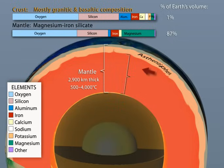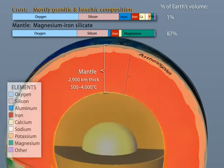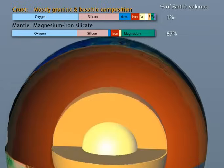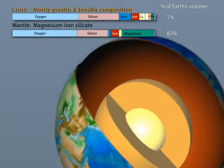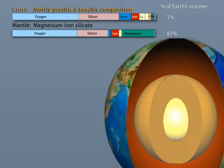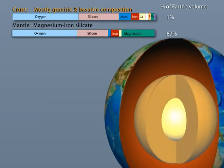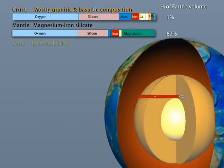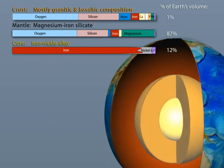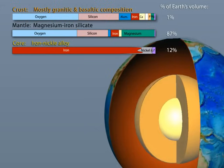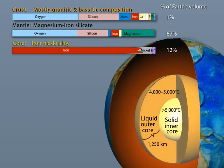The lower mantle comprises 55% of the planet by volume and is denser and hotter than the upper mantle. At the center of the Earth is the core, which is nearly twice as dense as the mantle because it's a metallic iron alloy rather than rock. Unlike the egg yolk analogy, Earth's core is made up of two distinct parts: the liquid outer core and a solid inner core.